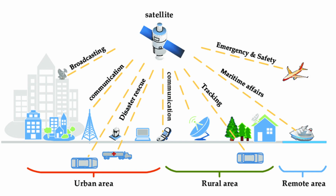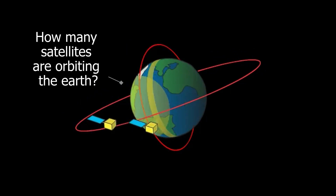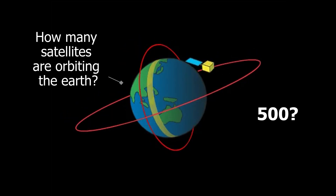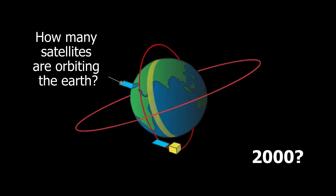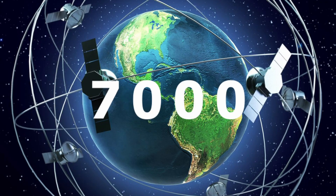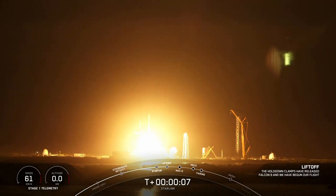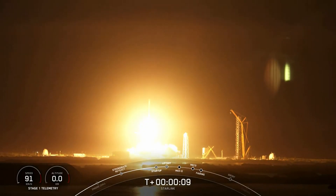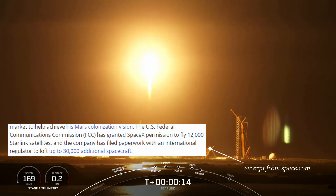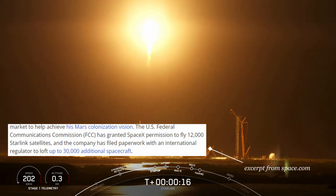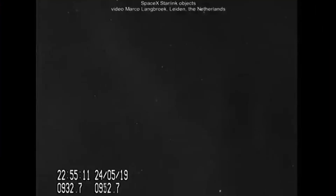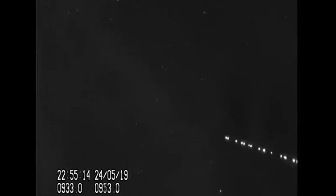Guess how many satellites are orbiting the Earth today — 500, 1,000, or 2,000? As of today, there are at least 7,000 satellites orbiting the Earth. To give you a perspective, Elon Musk is planning to launch at least 12,000 satellites just for Starlink alone to achieve planet-wide high-speed internet. This is nearly double the number of functional satellites we currently have orbiting the Earth.